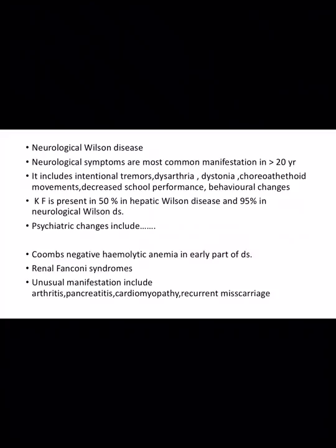Neurological Wilson disease usually presents in patients more than 20 years of age. It includes intentional tremor, dysarthria, dystonia, choreoathetoid movements, decreased school performance, and behavioral changes. KF ring is present in 50% of hepatic Wilson disease and 95% of neurological Wilson disease.